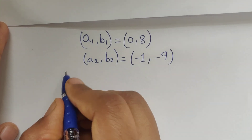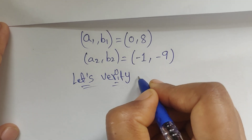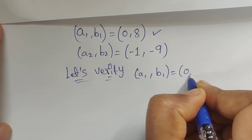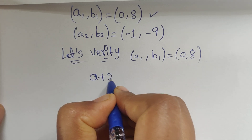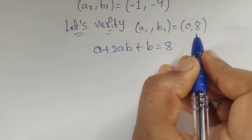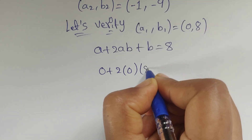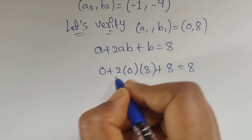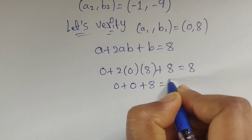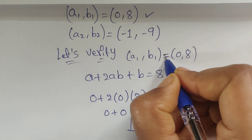Let's verify with the first values: a1, b1 equals 0 comma 8. The original equation is a plus 2ab plus b equals 8. Substituting: 0 plus 2 times 0 times 8 plus 8 equals 8. So 0 plus 0 plus 8 equals 8. That gives 8 equals 8, so these values are correct.